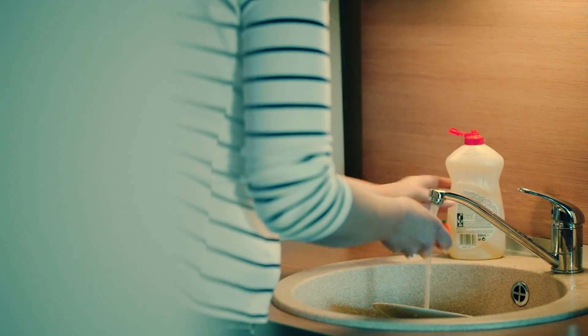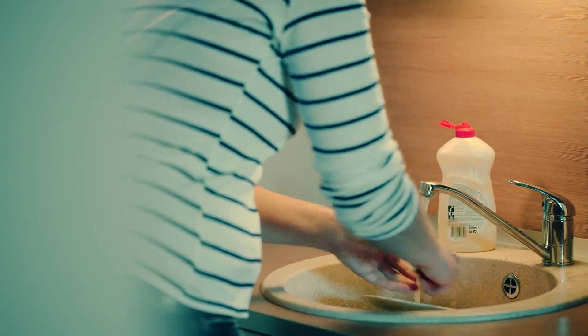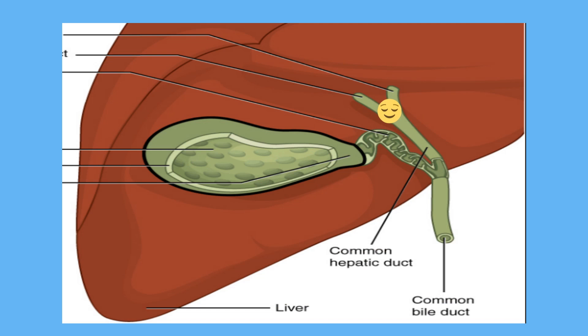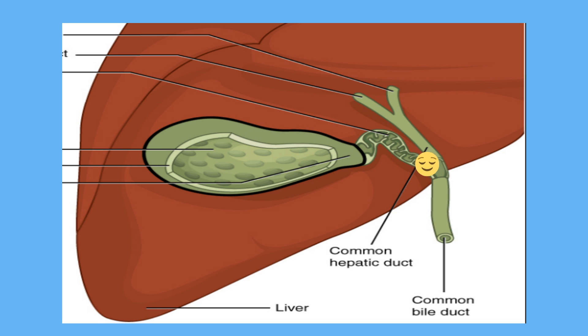Think of bile as the detergent you use when washing dishes after a really fatty meal. After the liver produces bile, it travels down the common hepatic duct and into the gallbladder. The gallbladder secretes bile into the upper part of the small intestine using the common bile duct.